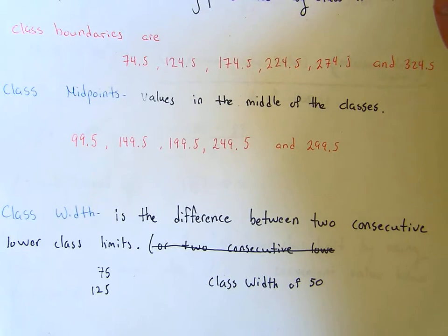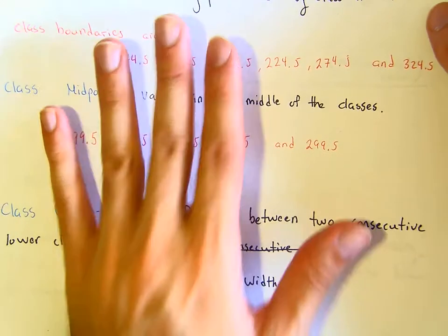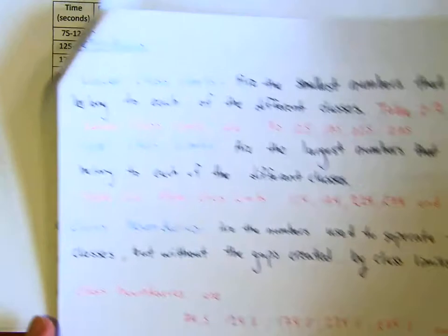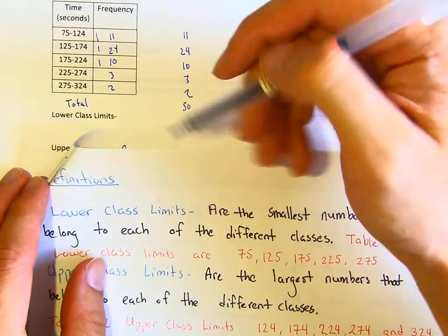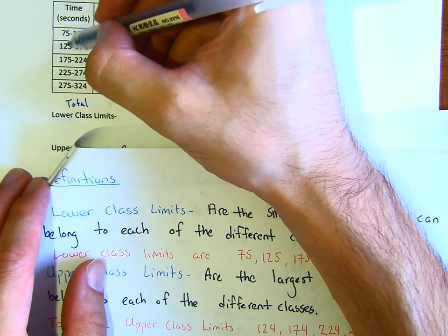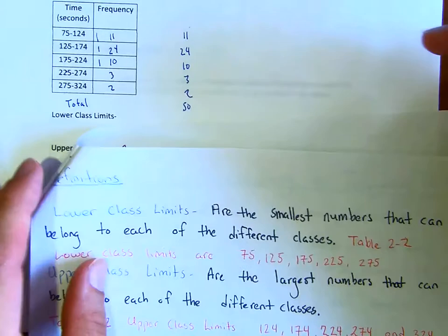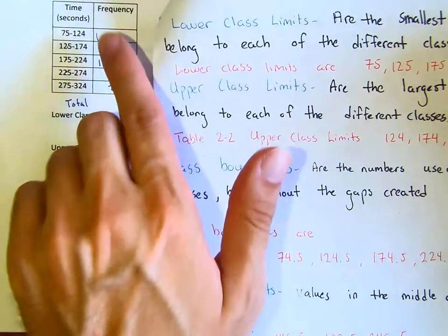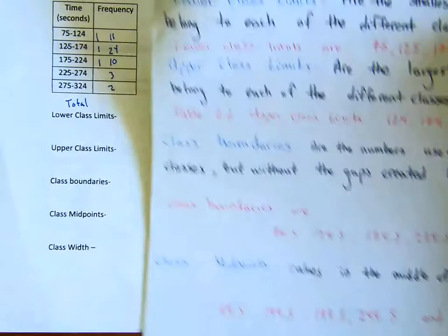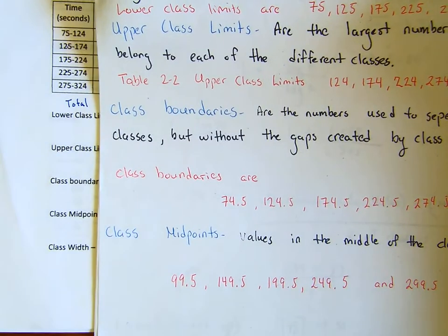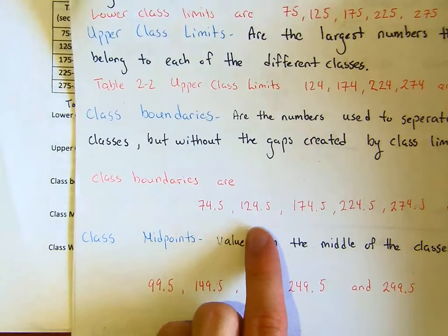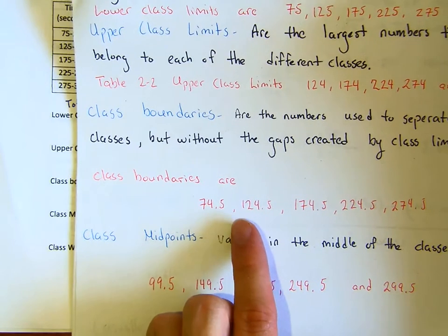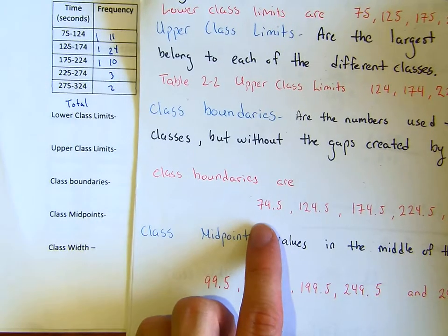Now let's go over them. The lower class limits are the smallest numbers that can belong to each of the different classes. Notice here they are 75, 125, 175, 225, and 275. The upper class limits are respectively 124, 174, 224, and so on. The boundaries separate the classes.